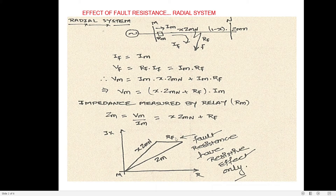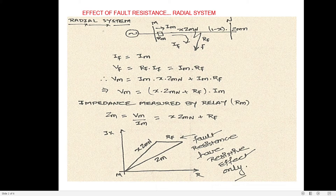It may happen that with a circular characteristic the measured impedance ZM does not fall inside the characteristic and the relay fails to operate. To avoid this, it was stated in the first session that mho relays, plain impedance relays, and offset mho relays all have limited fault resistance coverage. Therefore, a quadrilateral characteristic must be used because it provides higher resistance coverage.